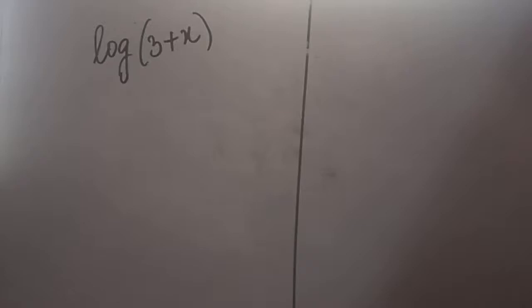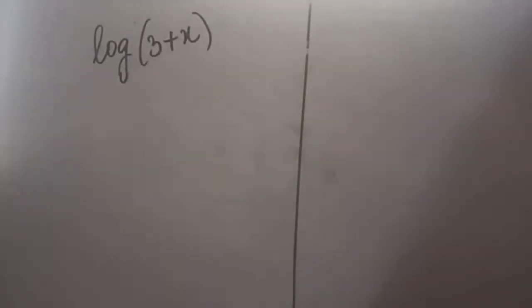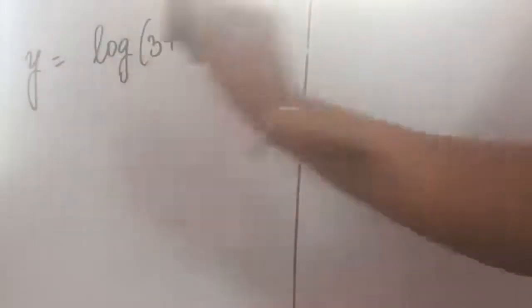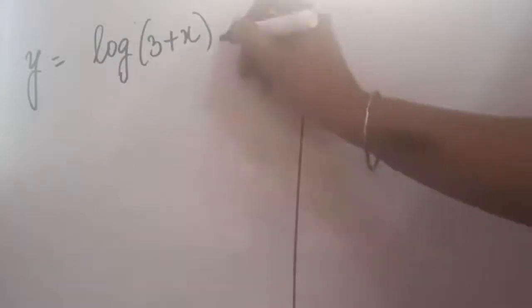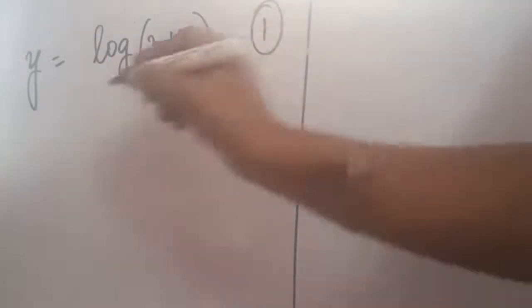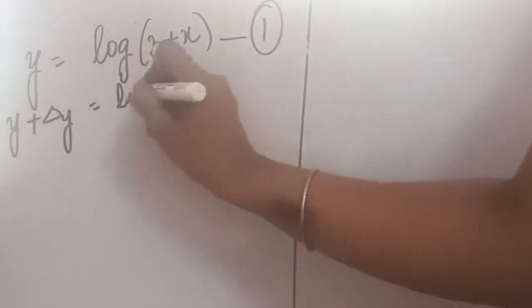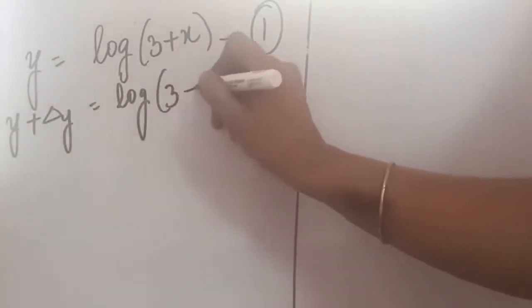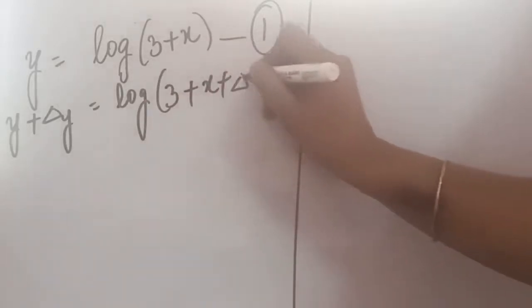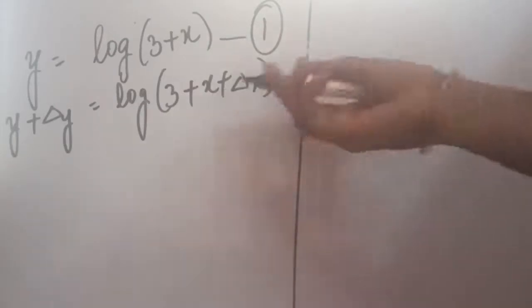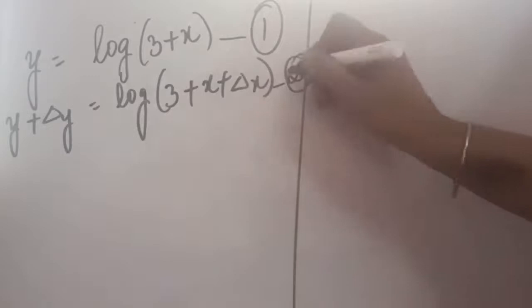Another set of questions with the help of first principle may be asked where there is log in the question and you have to apply the first principle. The first step is the same: putting the function equal to y, so this becomes our first equation. For the second equation, we will add the increments, adding delta y in y and delta x wherever x is. So now this cannot be further solved, so I am directly taking it to be the second equation.